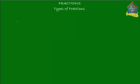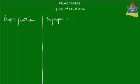Welcome to homecampus.com.sg. In the previous lesson we saw what a fraction is. In this lesson we're going to talk about the three different kinds of fractions. The first kind is called a proper fraction, the second kind is called an improper fraction, and the third kind is called a mixed number or a mixed fraction.